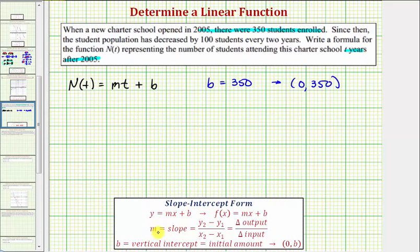Now let's talk about the slope. In general, the slope is equal to the change in output divided by the change in input, but in this situation the slope would be equal to the change in enrollment divided by the change in years. If we analyze the second sentence, we're told that the student population has decreased by 100 every two years. Therefore the slope m must equal negative 100 divided by 2, which equals negative 50. This tells us the student population decreased by 50 students each year.